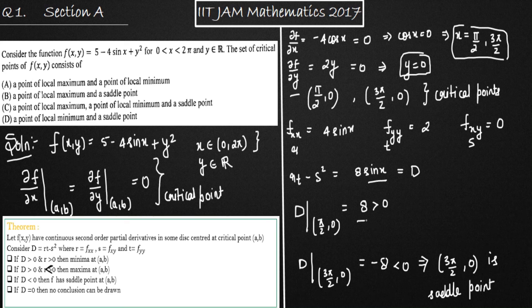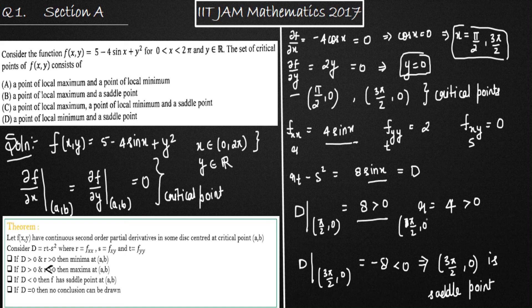Since D > 0 at (π/2, 0), we still need to calculate r. So r = fxx = 4sin(π/2) = 4, which is also greater than 0. Therefore, (π/2, 0) is a point of local minima. So we conclude that (π/2, 0) is a point of local minima and (3π/2, 0) is a saddle point.